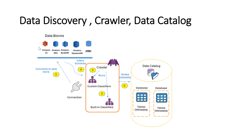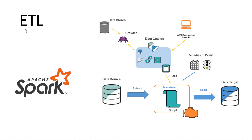Throughout this whole process, the data is still sitting in S3 itself, while you are able to query it from Athena, Redshift, or EMR. You can also use the Glue Data Catalog as a metadata repository for all your data sources, such as S3, RDS, Redshift, DynamoDB, or any other database. So the Glue Data Catalog can serve as a centralized metadata repository for all your data sources.